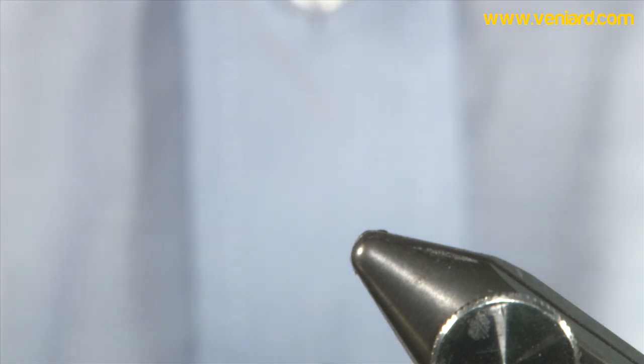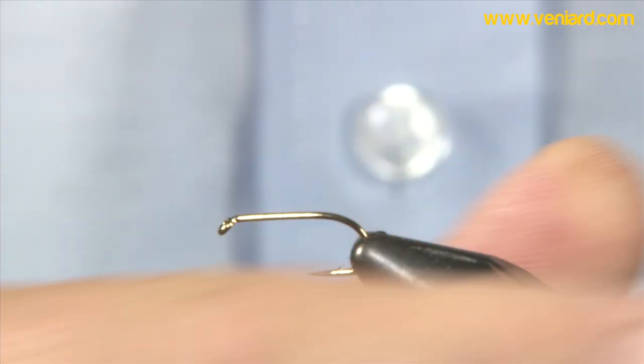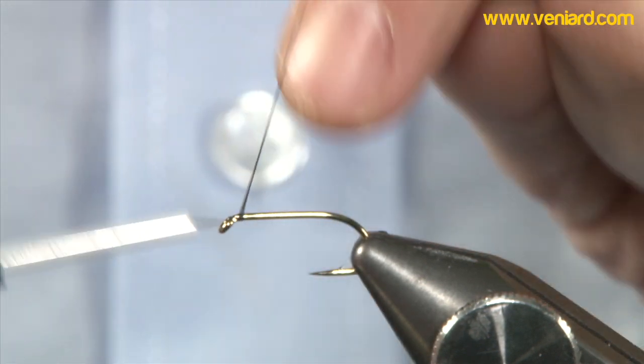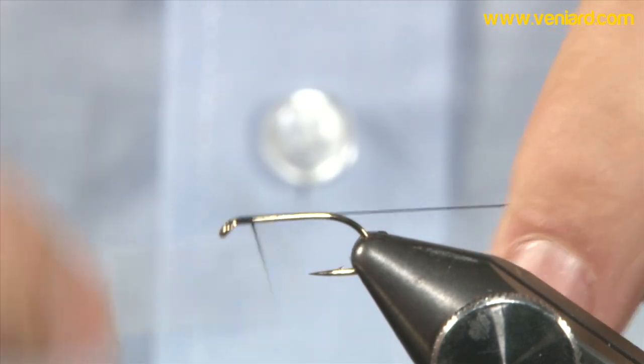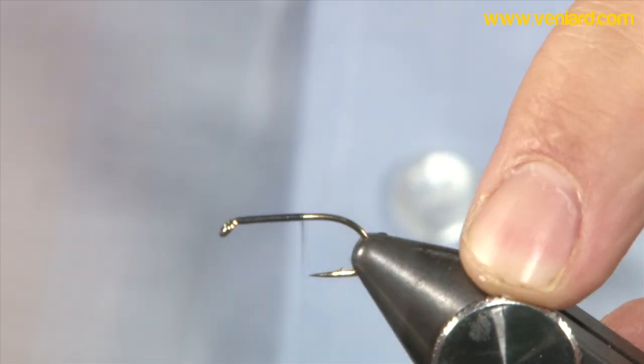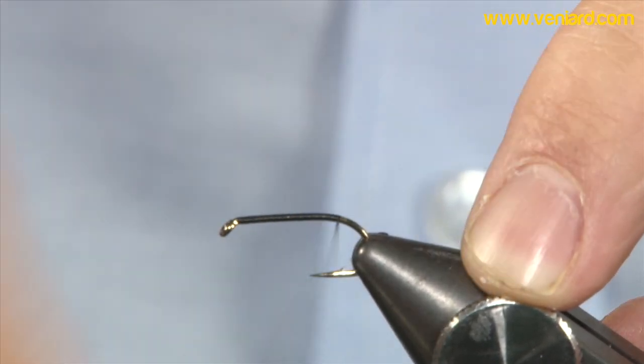In the vise I'm going to place a size 10 Fuller Mill Competition heavyweight hook, black floss. It will come right now. Just as it starts coming round the bend, I'm going to tie in this wonderful herald.